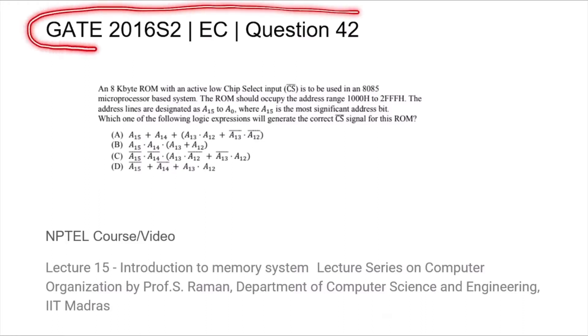This is question 42 from the GATE 2016 session 2 EC paper, where we are given an 8 kilobyte ROM with an active low chip select input. What is required is to address the range 1000 hexadecimal to 2FFF hexadecimal. There are 15 address lines, a15 to a0, and we are asked to find out what is the correct combination of the address bits that will generate the CS bar signal.